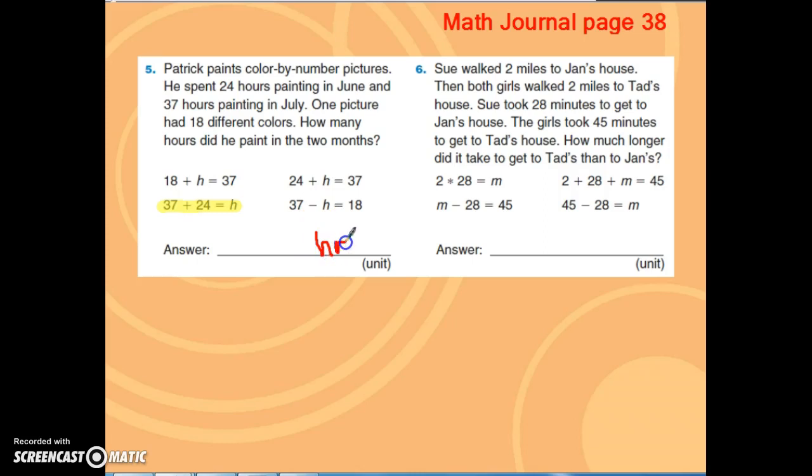And again, if you know the abbreviation, you can put the abbreviation. Let's take a look at the next one. Sue walked two miles to Jan's house, then both girls walked two miles to Tad's house. Sue took 28 minutes to get to Jan's house. The girls took 45 minutes to get to Tad's house. How much longer did it take to get to Tad's house than Jan's?